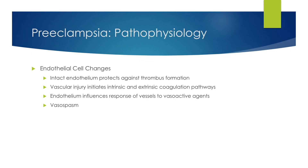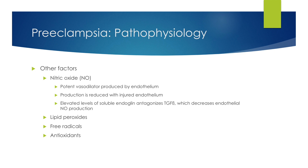In preeclampsia, endothelial cell changes are seen. An intact endothelium protects against thrombus formation, but with vascular injury, this initiates the intrinsic and extrinsic coagulation pathways. The endothelium influences response of vessels to vasoactive agents, leading to increased vasospasm. Nitric oxide is normally a potent vasodilator produced by the endothelium, and its production is reduced with an injured endothelium. Elevated levels of soluble endoglin antagonize TGF-beta, which decreases endothelial nitric oxide production. Lipid peroxidases, free radicals, and antioxidants also play a role in the pathophysiology of preeclampsia.